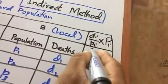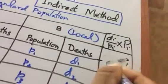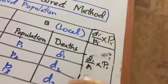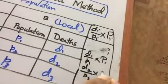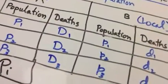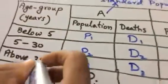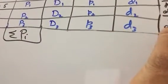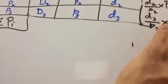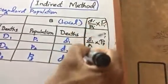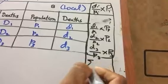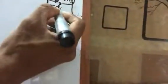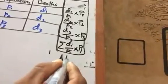So this is d1 over small p1 multiply P1. This is d2 over p2 multiply P2 from this age group. From the age group above 30 years, this is d3 over p3 multiply P3. And we add this column, we get summation di over small pi multiply capital Pi.